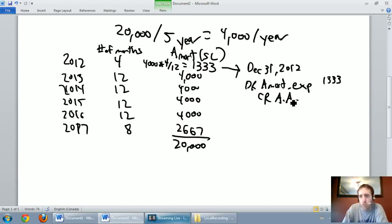I just want you to not lose sight that that's what the journal entry is for amortization. In 2013 I would debit Amortization Expense, credit Accumulated Amortization for $4,000, and again that would happen at my fiscal year end.